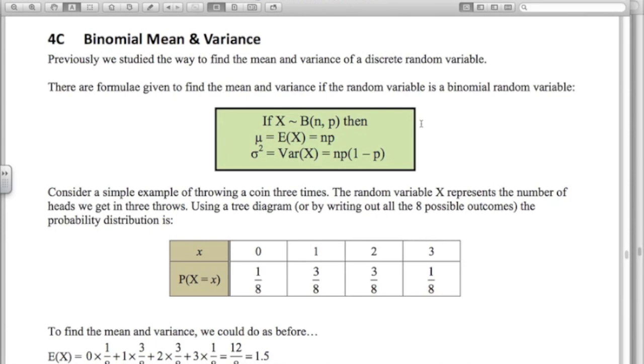So the mean, the expected value, is just 10 times 0.5. If you played 20 games and you had a quarter chance of winning any game, then once again you'd expect 20 times a quarter—you'd expect to win five games during the season. So the formula for the mean is just n times p for a binomial random variable.